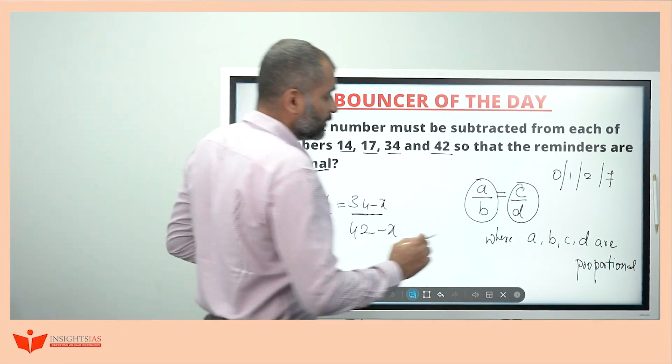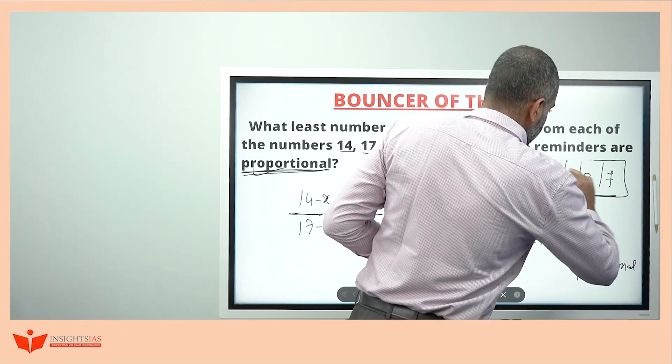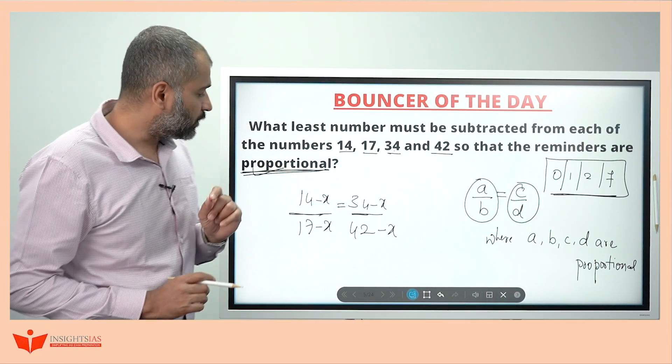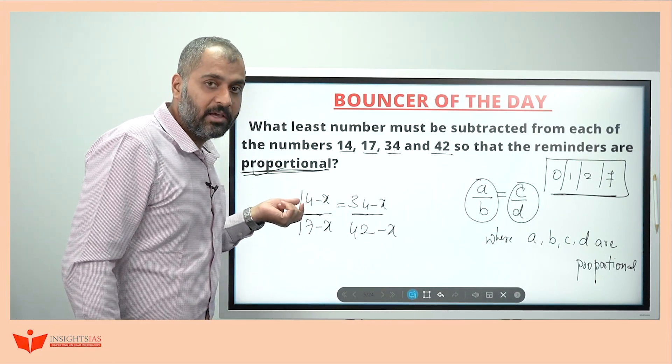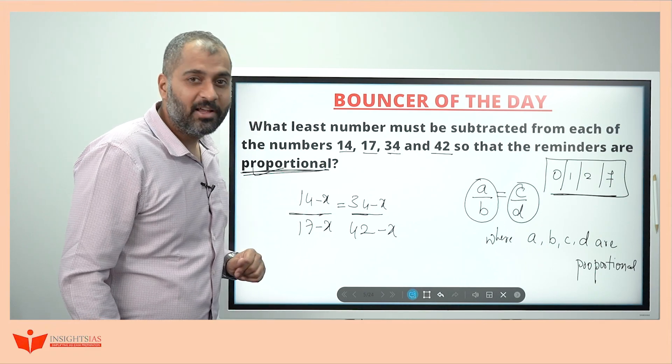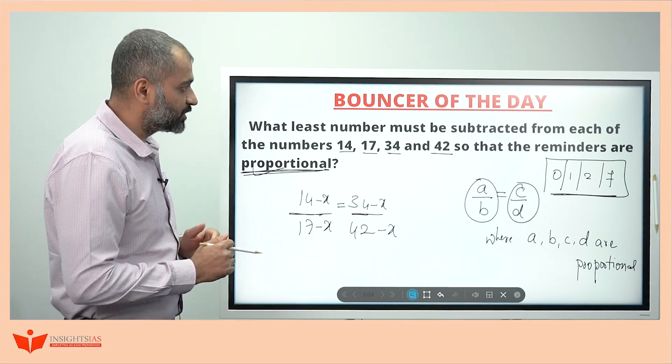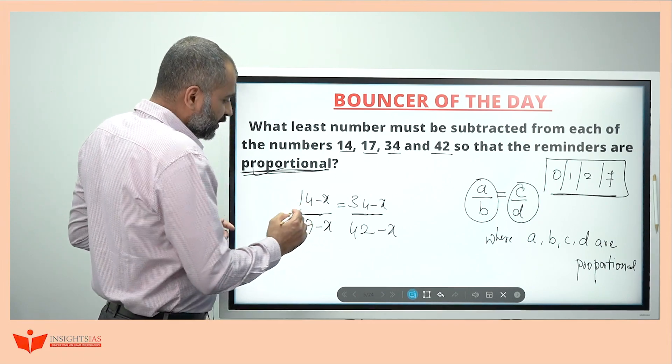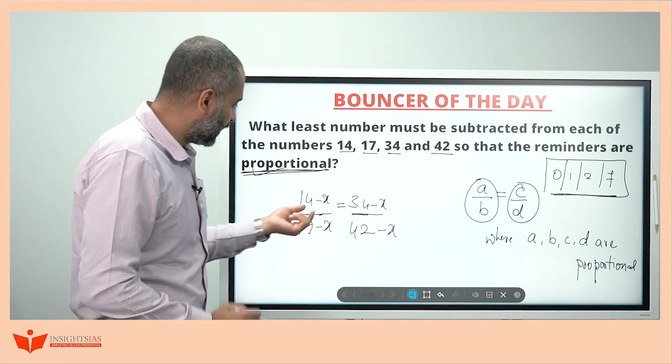So which of these values? You have options: 0, 1, 2, 7. Make use of the options. Do not try to do it with quadratic equations guys. Do not be engineers always. Think from a layman perspective also. Be sharp. 0, 1, 2, 7.